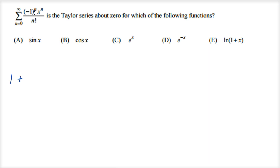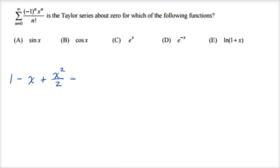When n is one, negative one to the first is negative, so we get minus x to the first over one factorial, which is just minus x. When n is two, negative one squared is positive, so we get plus x squared over two.